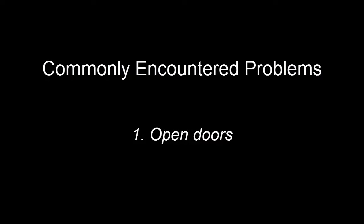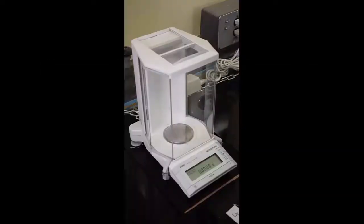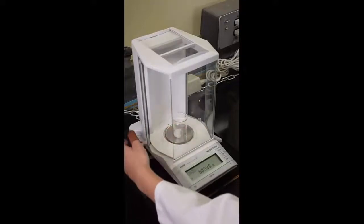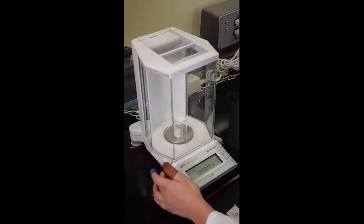1. Open Doors. Balance readings are very susceptible to drafts. Erratic readings are usually a result of an open door on the balance compartment.